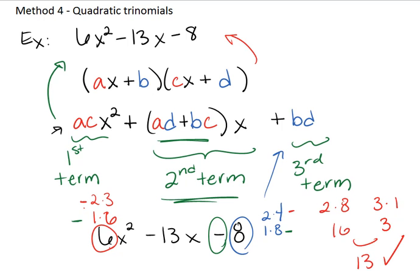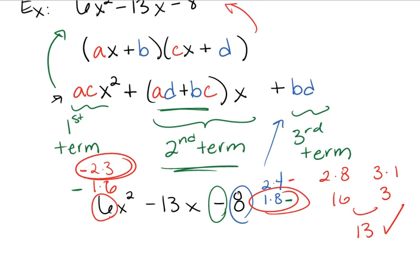Okay, so our pairs are 2 and 3, and 8 and 1. So this is a good start.